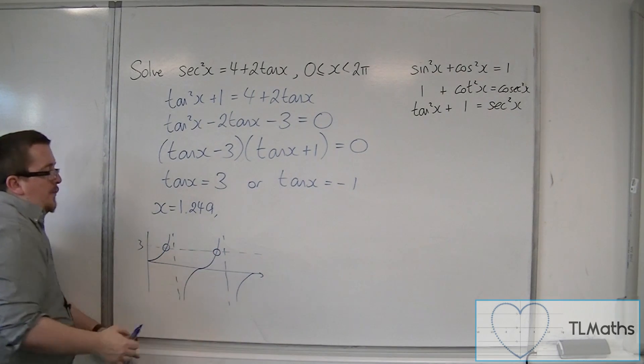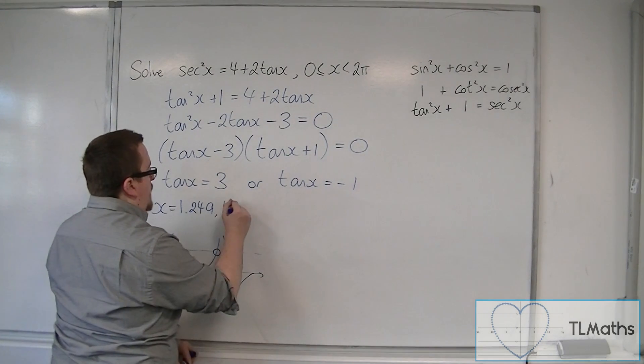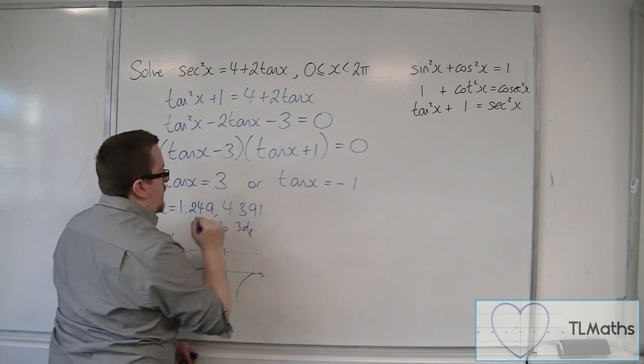Our next solution is by adding pi. So add pi to it. So 4.391. They're both given to 3 decimal places.